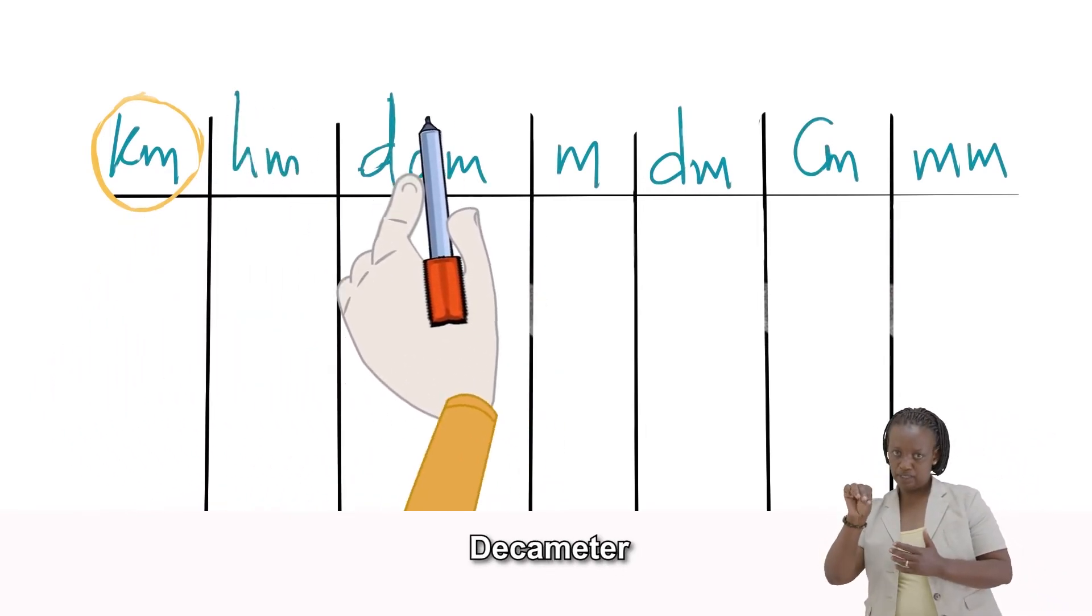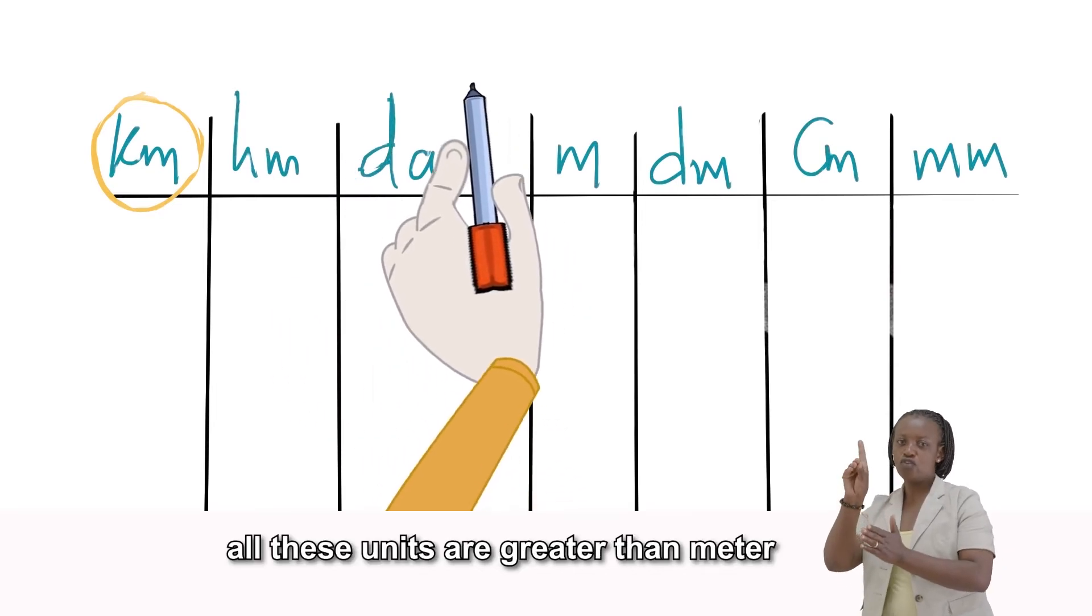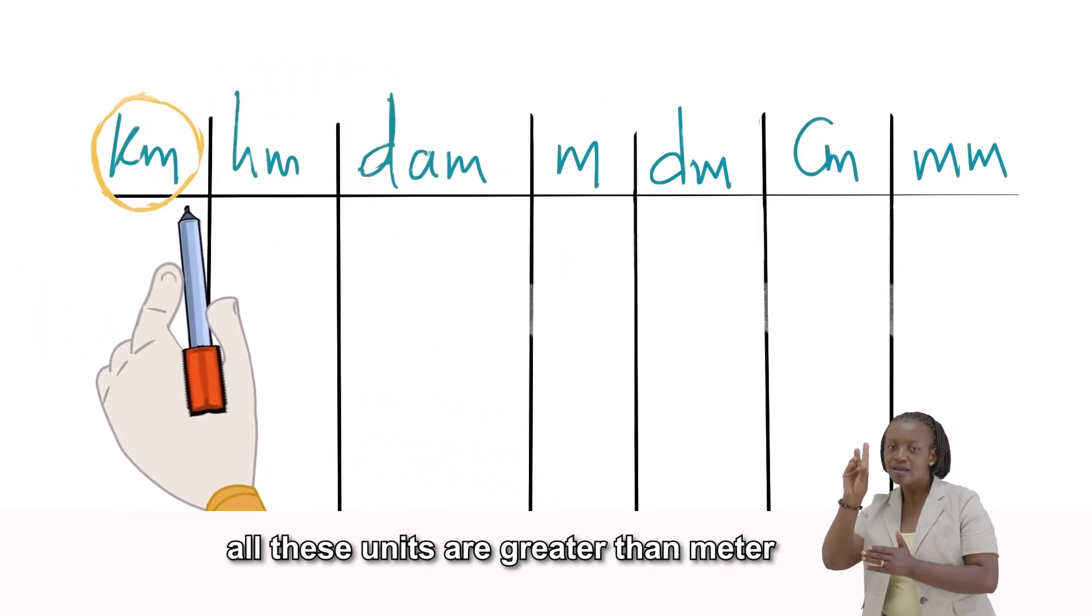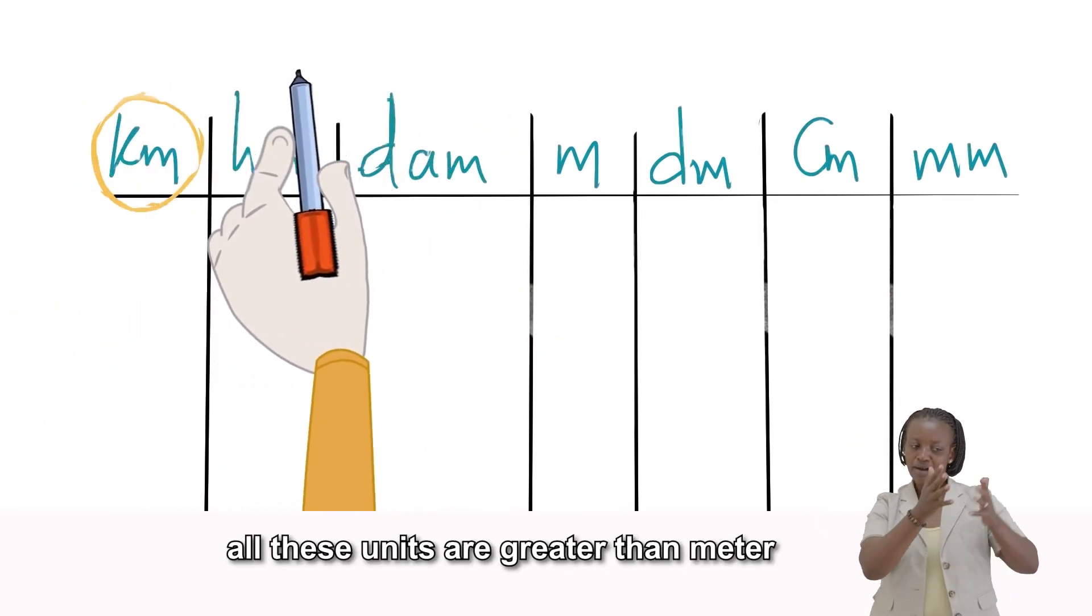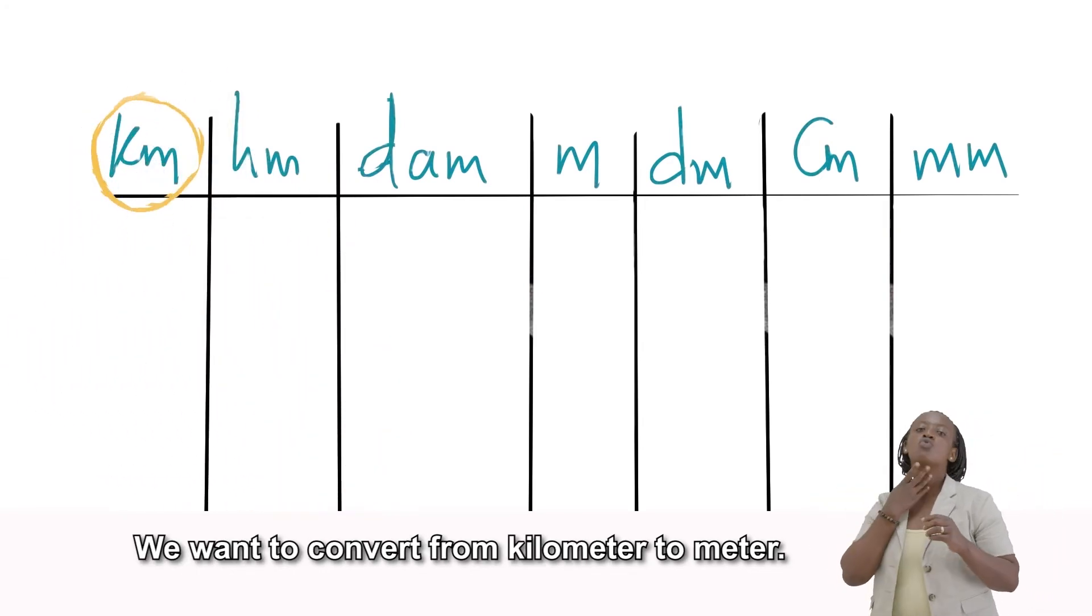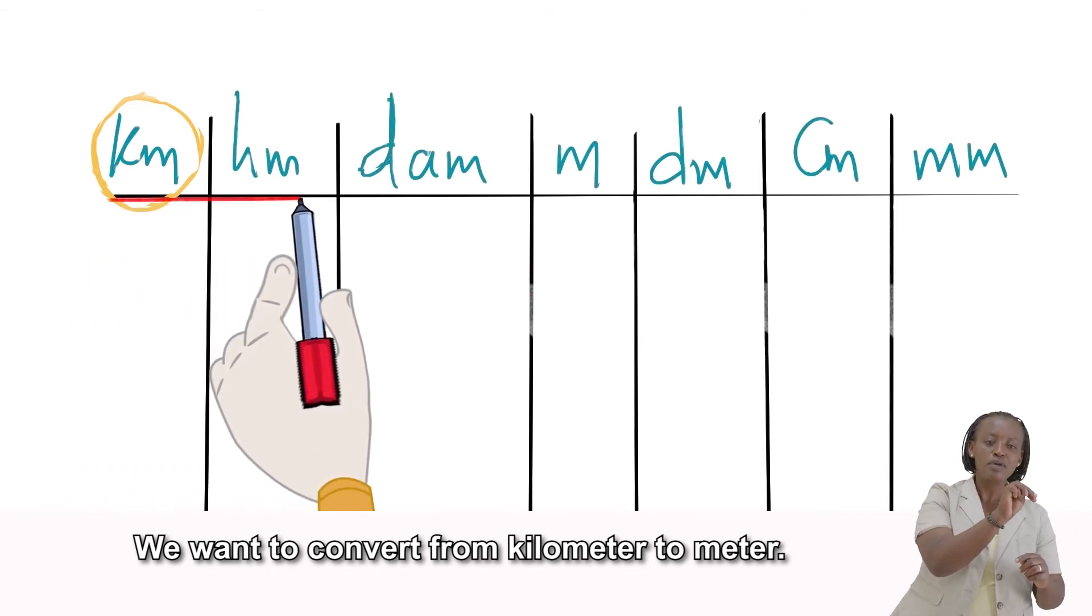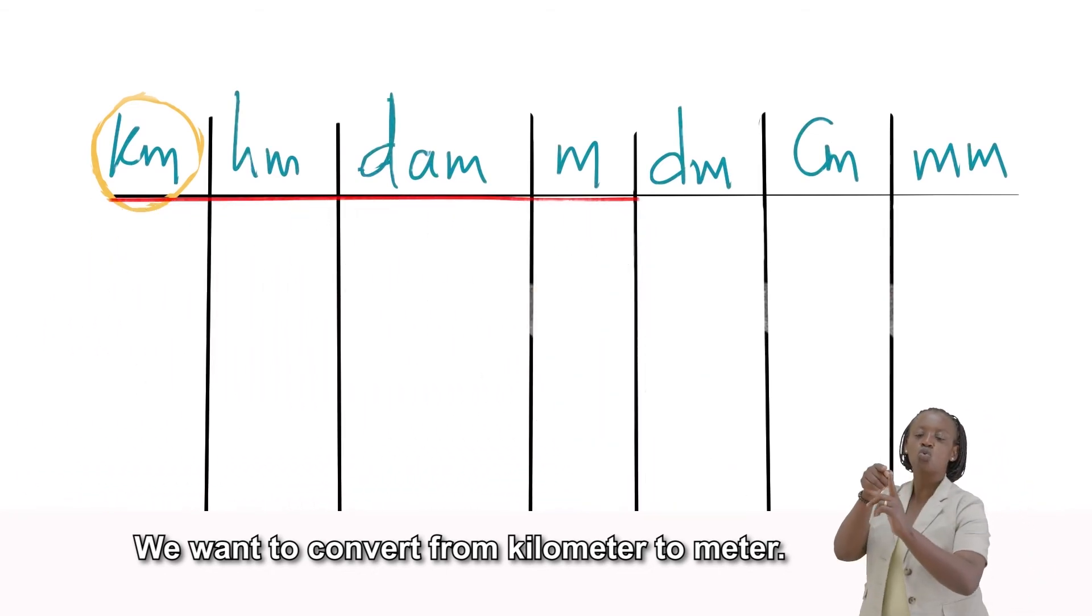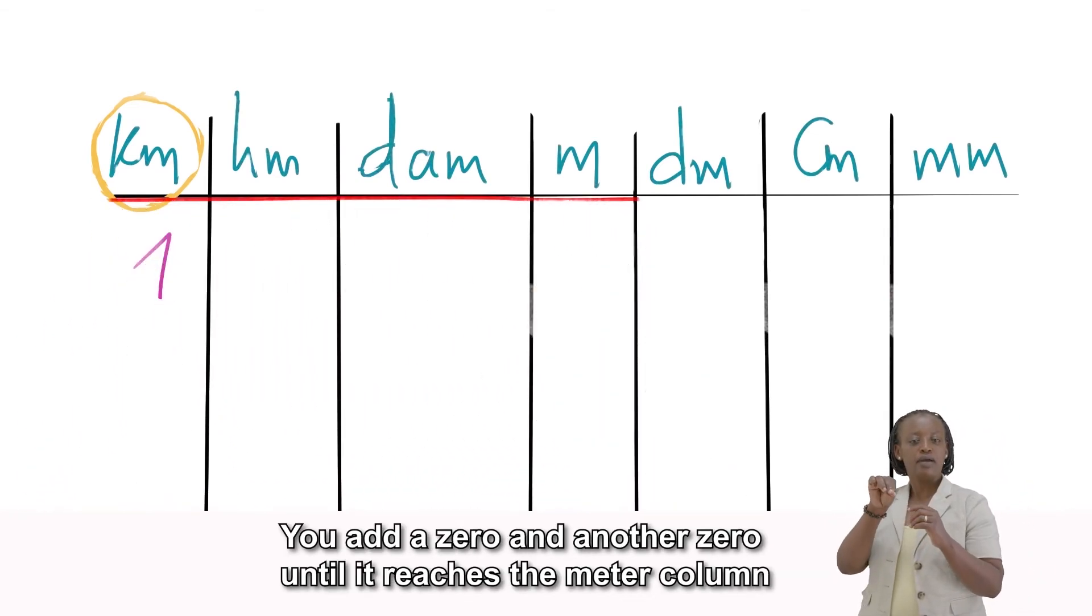Hectometer, decameter. All these units are greater than meter. We want to convert from kilometer to meter. You add a zero